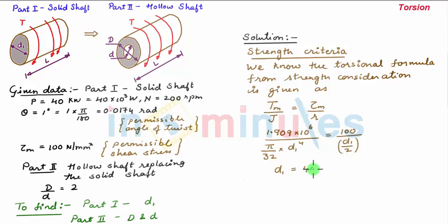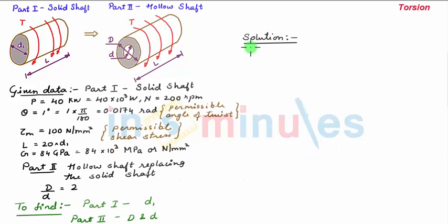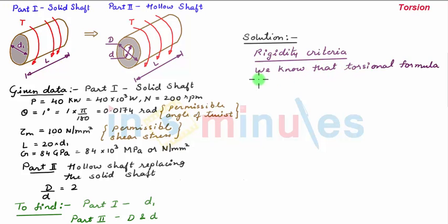Next we consider the rigidity criteria. We know that the torsional formula from rigidity consideration is given as